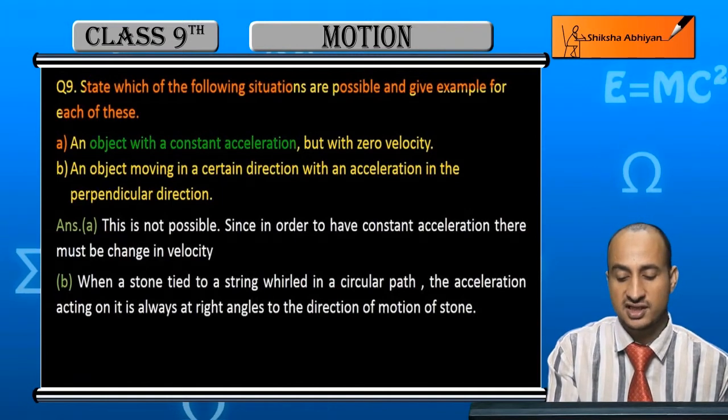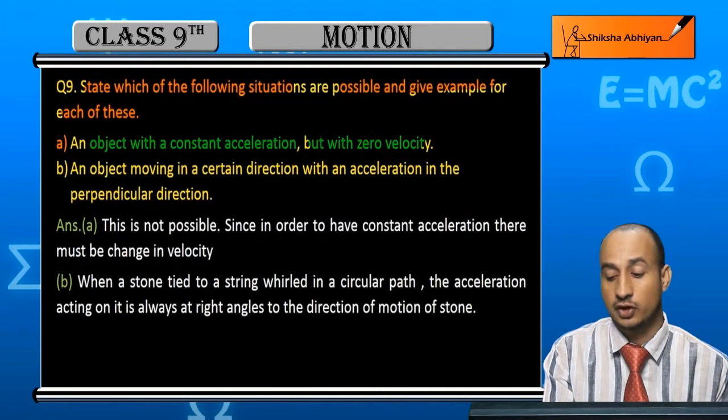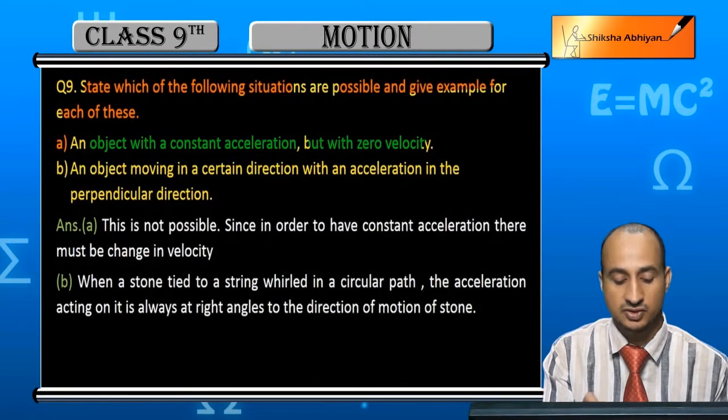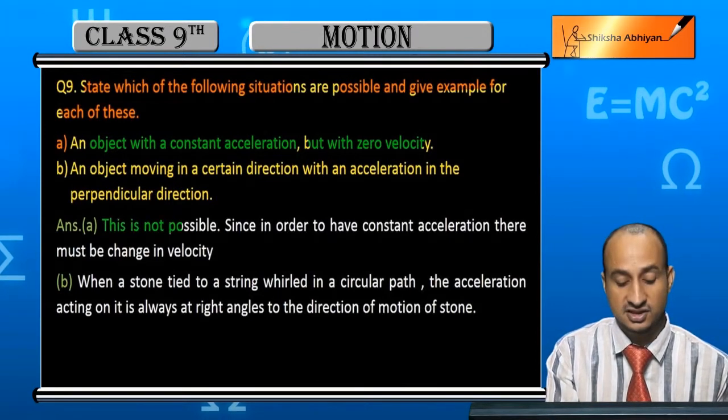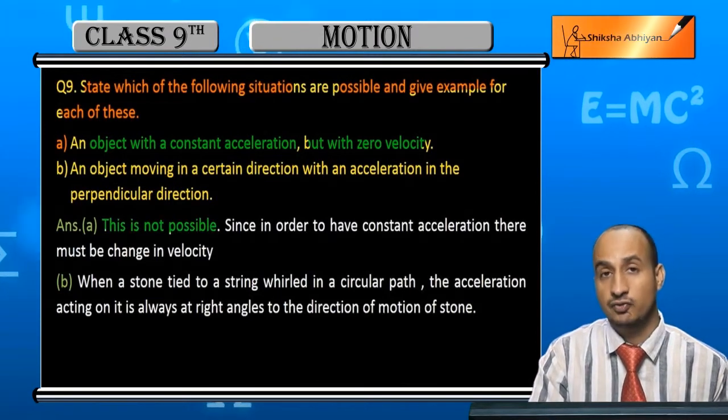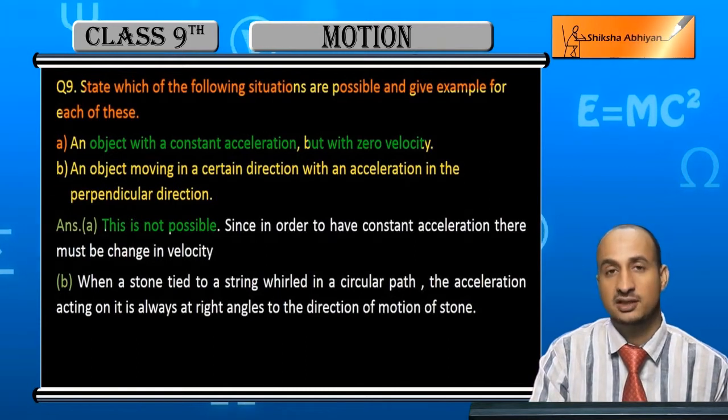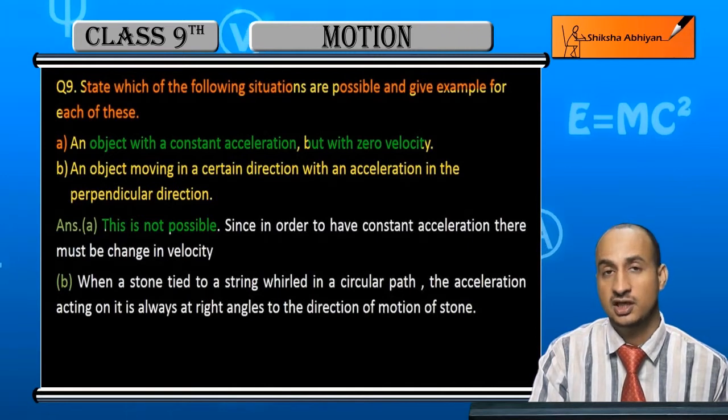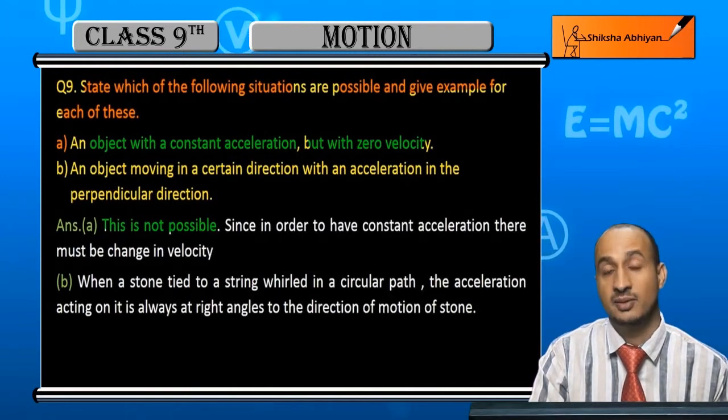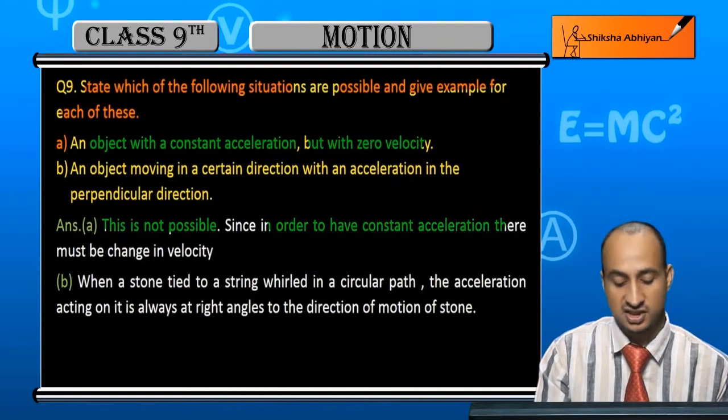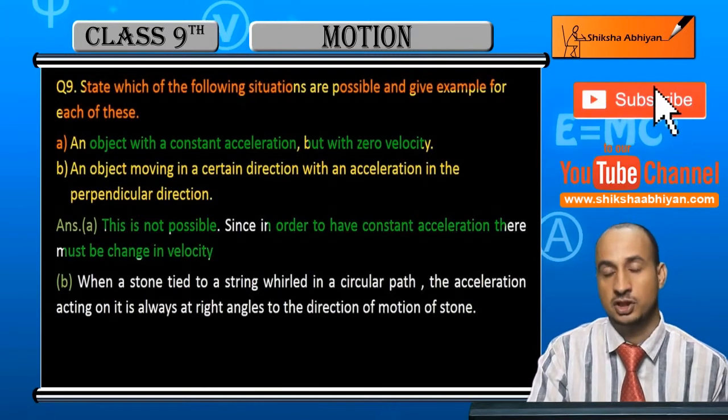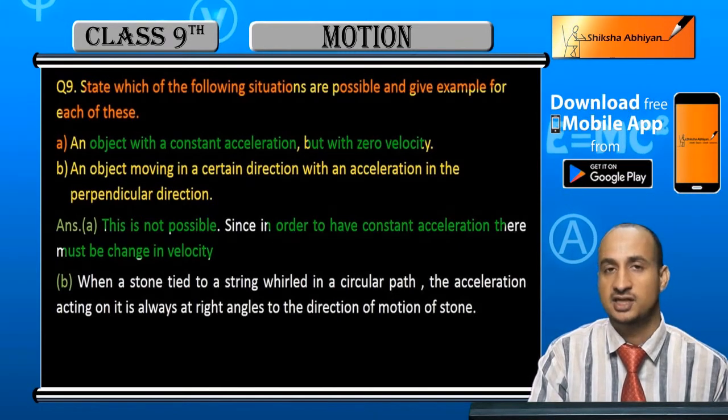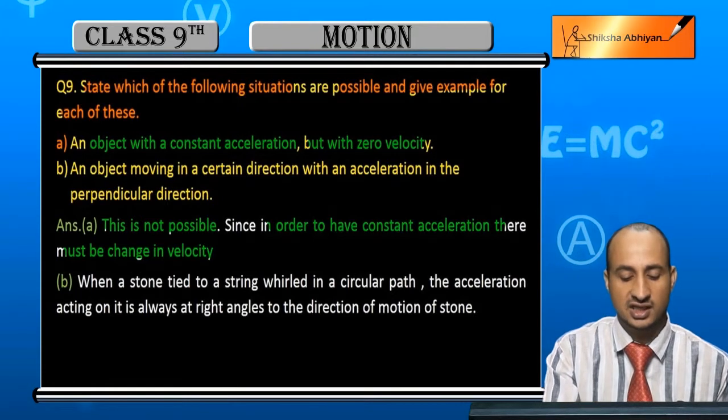An object with a constant acceleration but with zero velocity. Can this be possible? Students, this is not possible. Because if velocity is zero then what will happen? Since in order to have constant acceleration there must be change in velocity, but here velocity is zero, no change in velocity, so there is no acceleration. Second situation is...